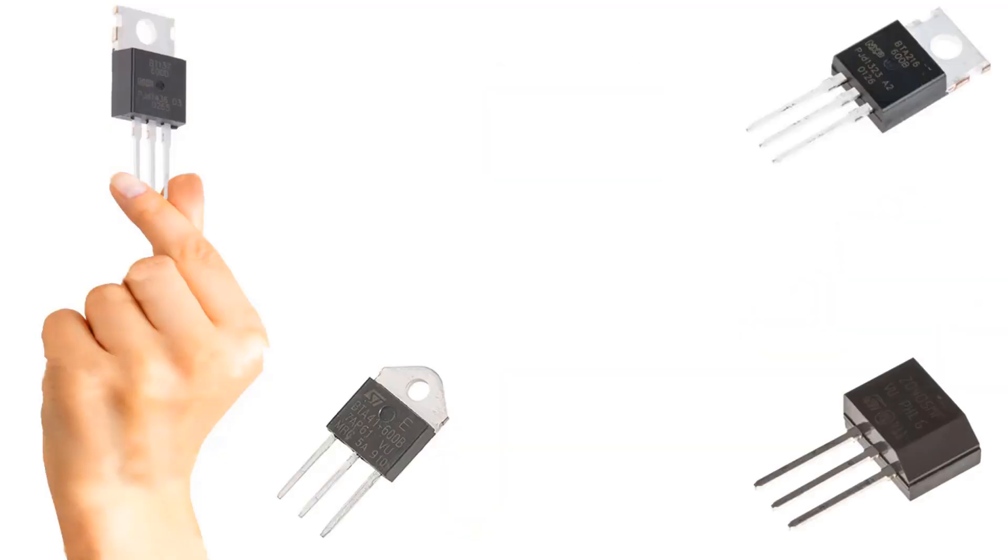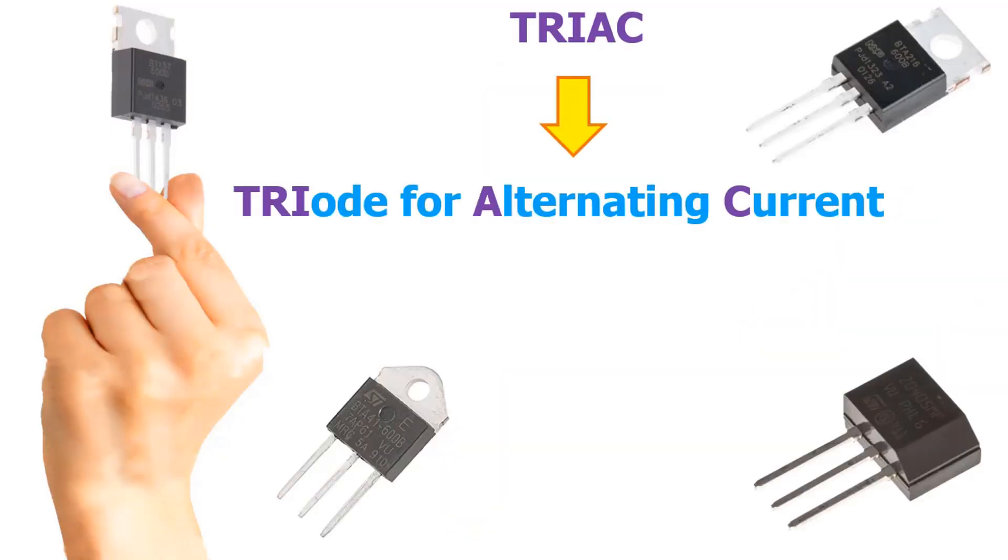The abbreviation TRIAC comes from the initials of the English words triode for alternating current. It is understood from its English name that this three-pin power electronic circuit element is used in alternating current.